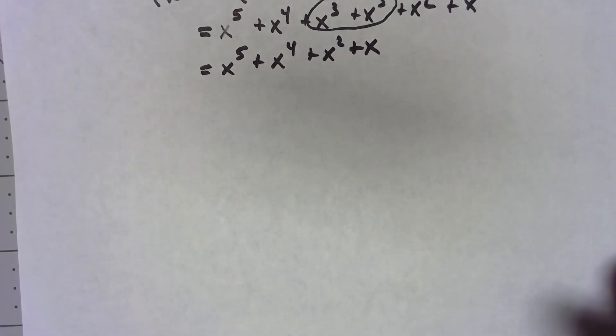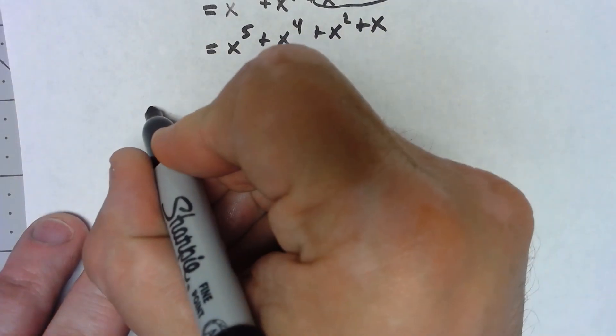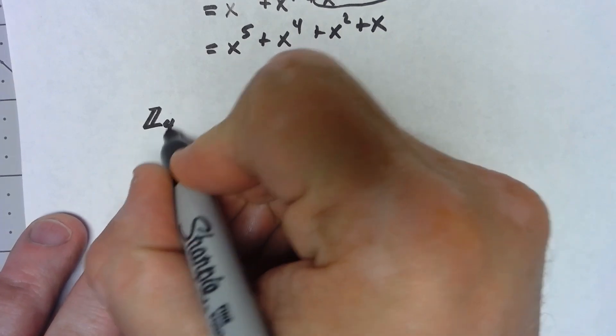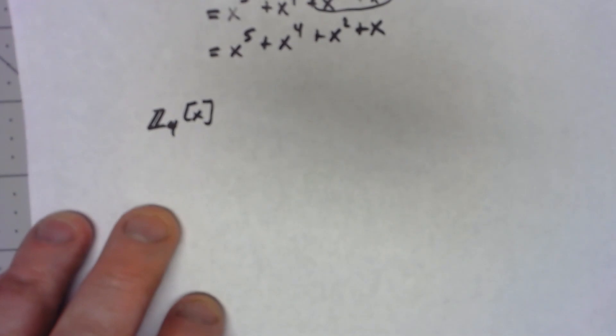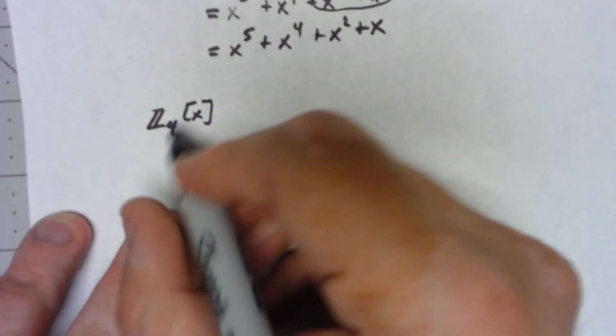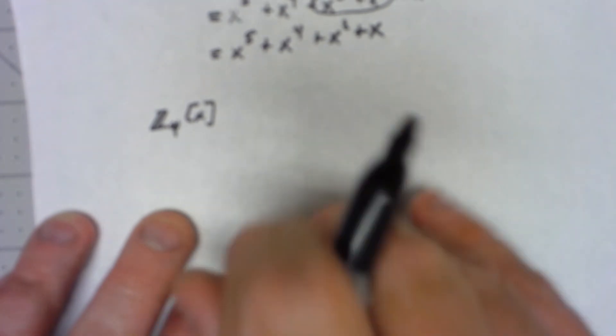Let's do it again and let's maybe go to say Z4x, just so we've got things that aren't just binary. So now my coefficients for my polynomial can be either 0, 1, 2, or 3.